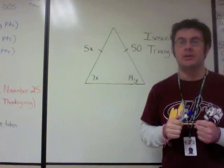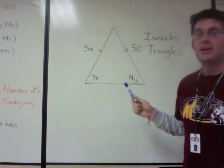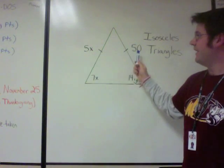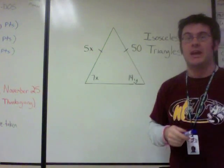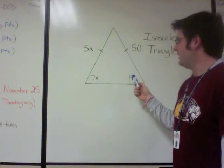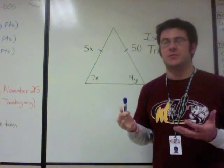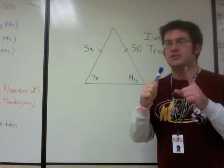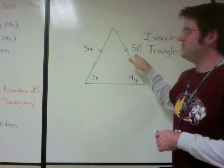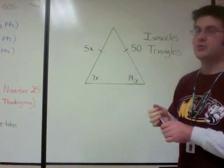We have an example problem here on the board. We have an isosceles triangle, and the two congruent sides are 5x and 50. We also have our two base angles marked: 7x and 14y. We're going to have to solve for x first before we can get y. We can say that 5x is equal to 50 because the two sides are congruent to each other.